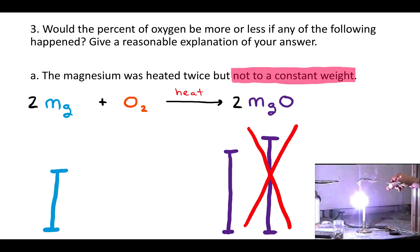And so that means that the percent of oxygen is going to be the difference between those two, between the blue magnesium and the purple magnesium oxide, which is lower here because there was still magnesium that could have turned into it. So what does that do to the percent of oxygen? Is it bigger or is it smaller than it would have been?